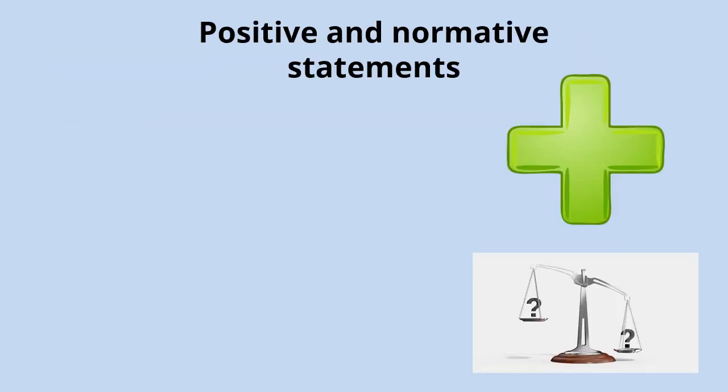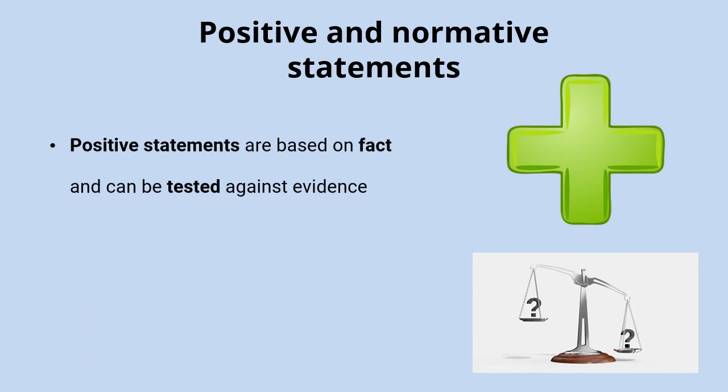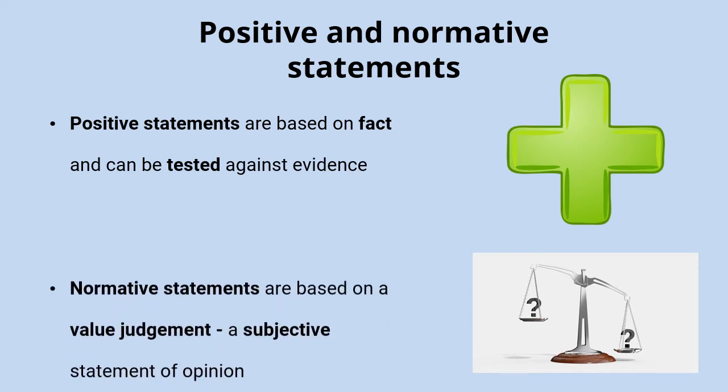In economics we make a distinction between two different types of statements. Some statements are testable against evidence and facts, and some statements are based on opinions. The first of those we call positive statements — they're based on facts and they can be tested. It doesn't necessarily mean they're going to be correct, but you can test them against evidence. The other kind are what we call normative statements, and they're based on value judgments — subjective statements of opinion based on what ought to be.